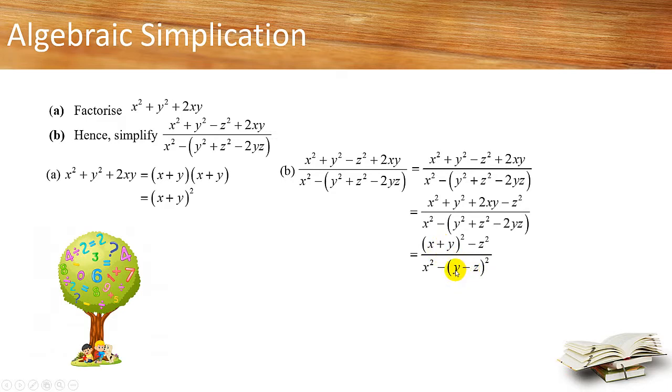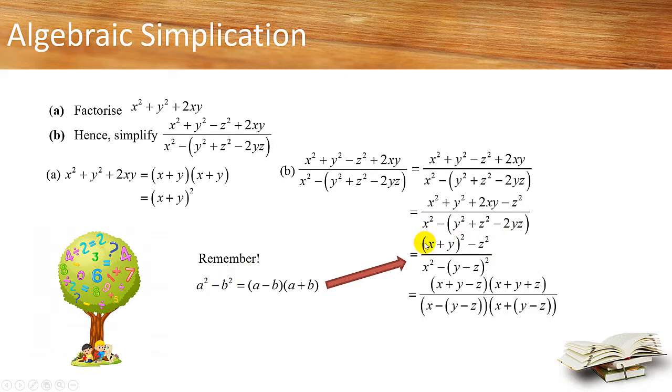And now from here, you need to apply a very important property, which is a square minus b square equals to a minus b times a plus b. Can you recall this property? We have used this property in the previous question. So if you treat this whole thing as a and you treat this whole thing as b, then when you factorize this, you will get x plus y minus z times x plus y plus z.